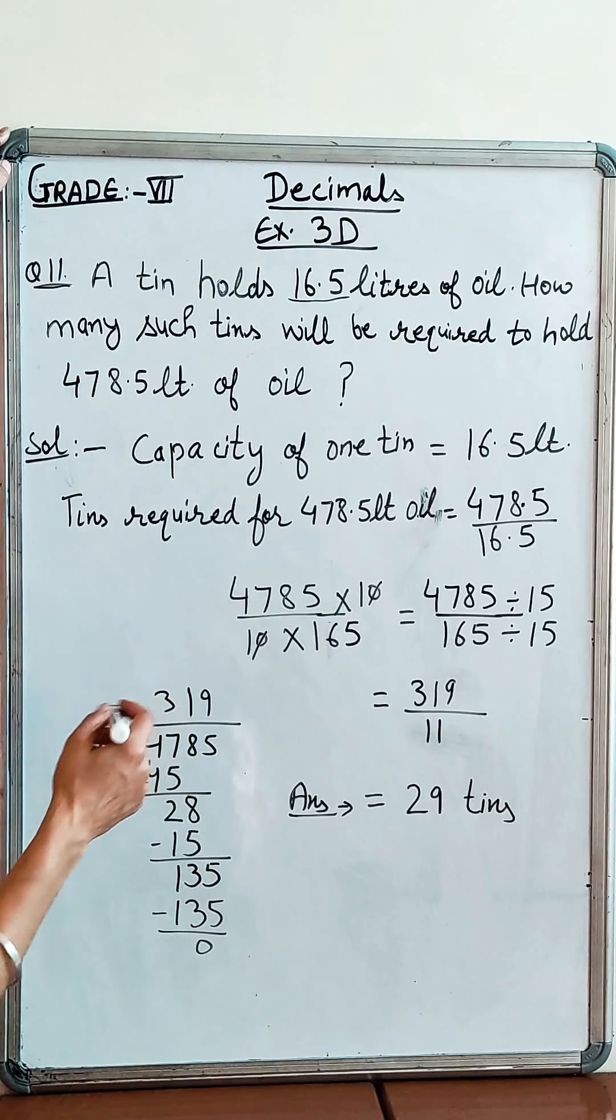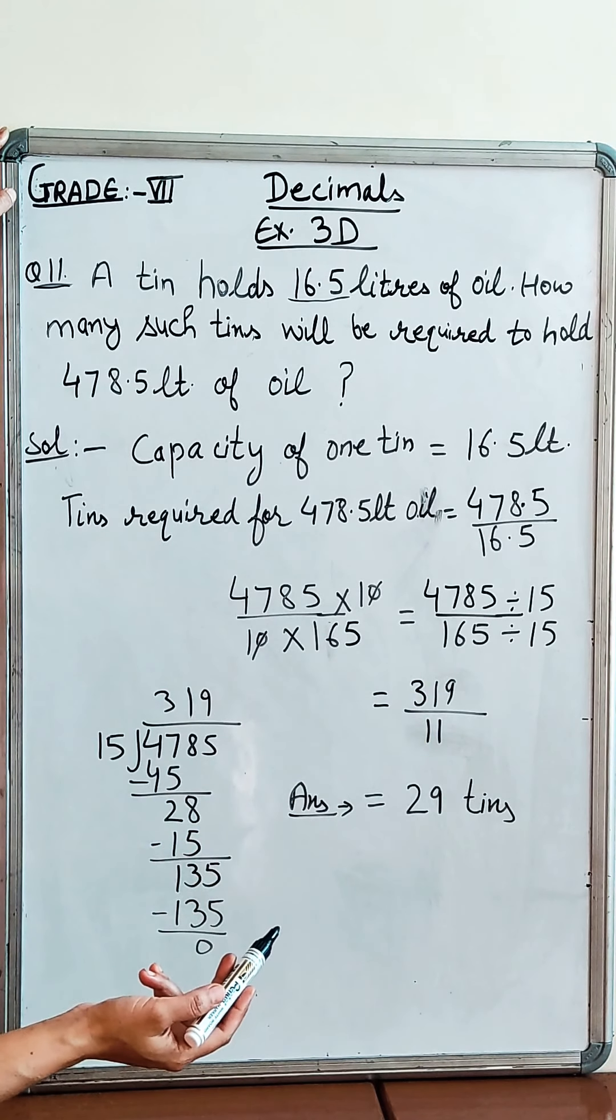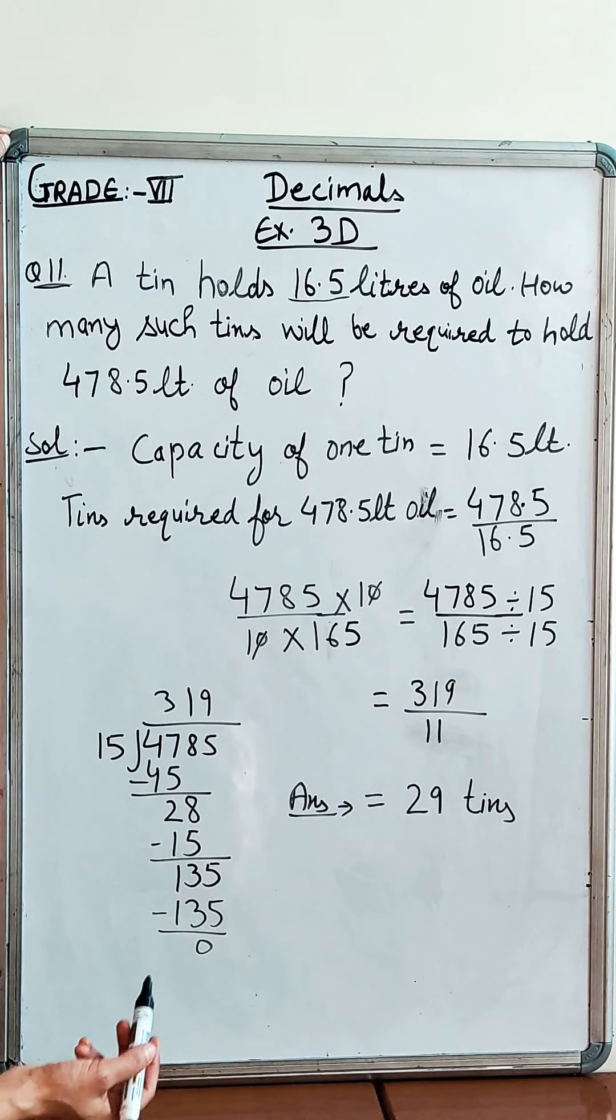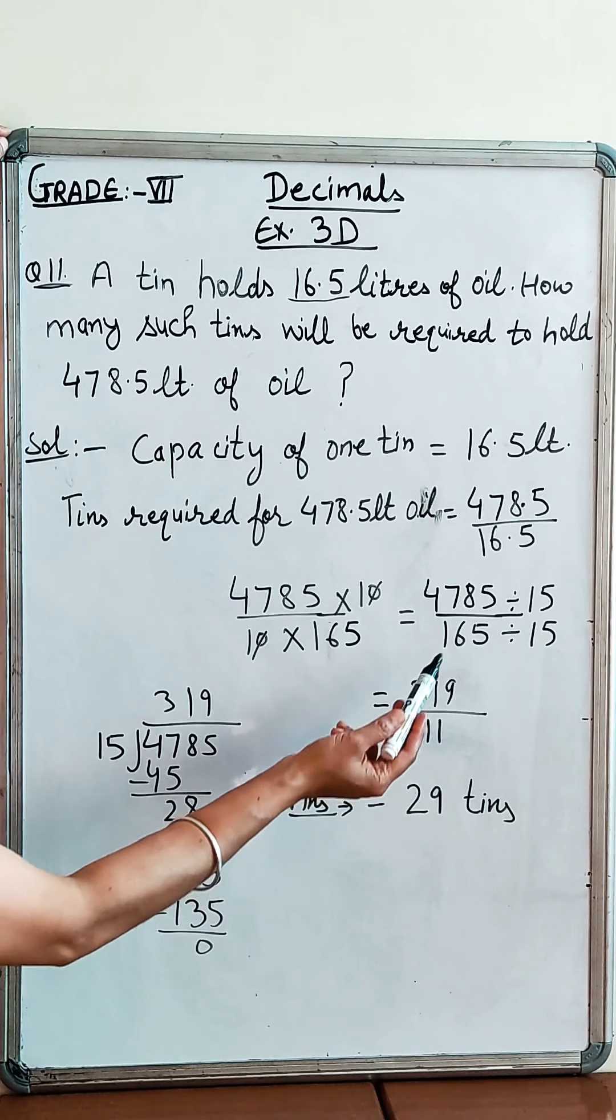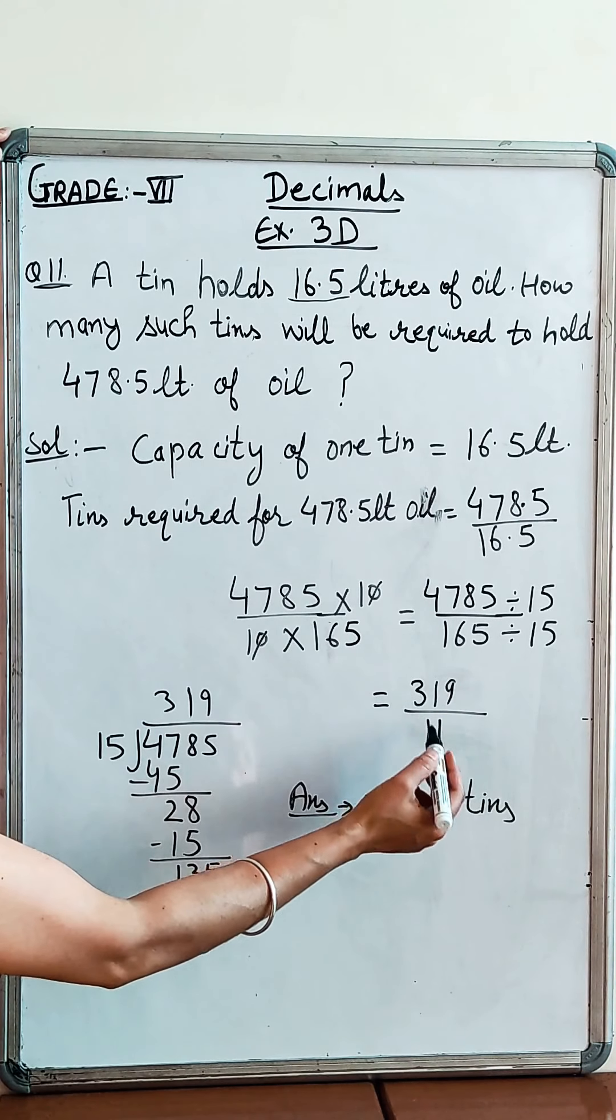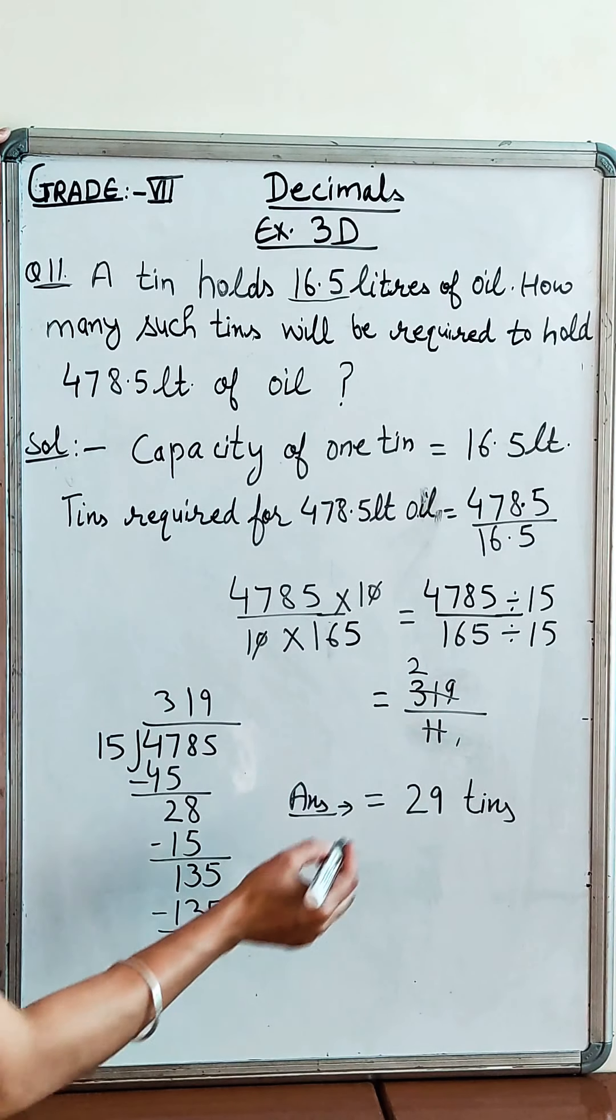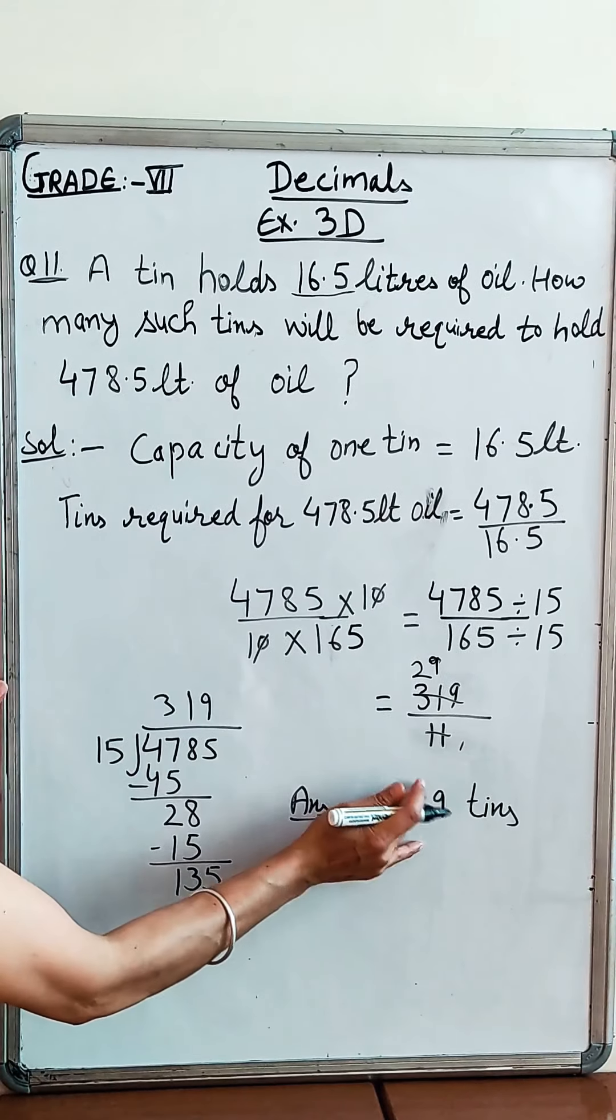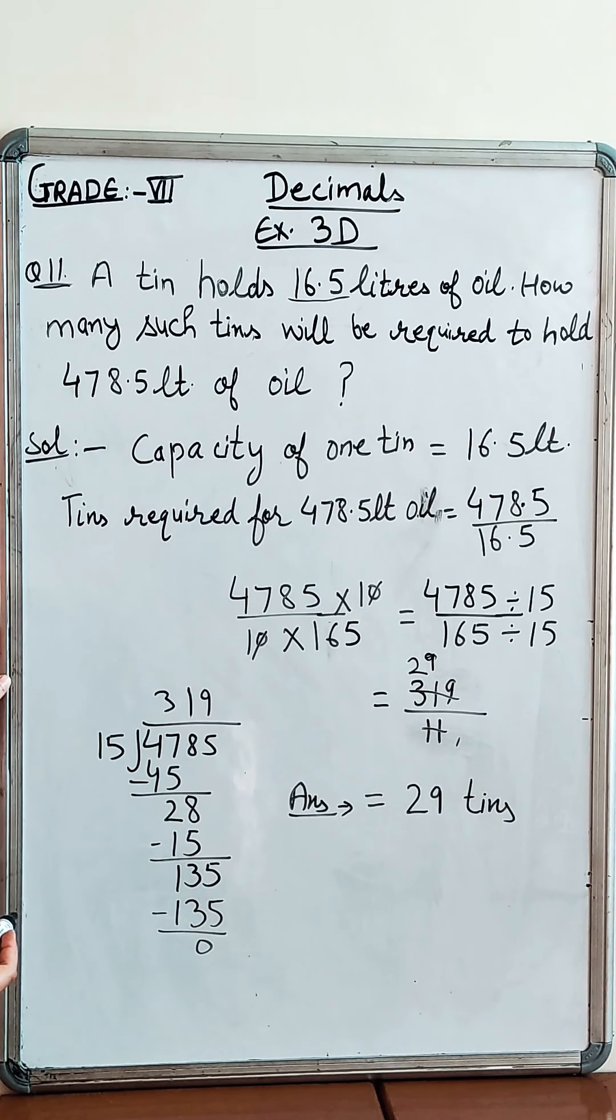Decimals cancel and you will have 4,785 over 10 and the reciprocal is 10 over 165. Decimals cancel and you will have 4,785 over 165. Now both numbers divide by 15. When you divide by 15, you will have 319. If this is 165, you will have 11. Now, 319 divided by 11 - 11 twos are 22, and you will have 99 left here. Remainder is 11, 11 nines are 99. You will have 29 tins for this 478.5 liter oil.